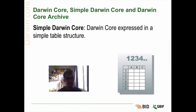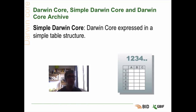The second one is Simple Darwin Core. It's basically using those terms and putting them in a table structure — for example, a spreadsheet where each column represents one Darwin Core term and one row represents one data entry. So when we say put your data into Darwin Core, it generally means put it in Simple Darwin Core, in a tabular format using Darwin Core terms as columns.